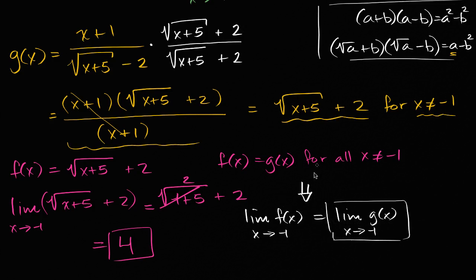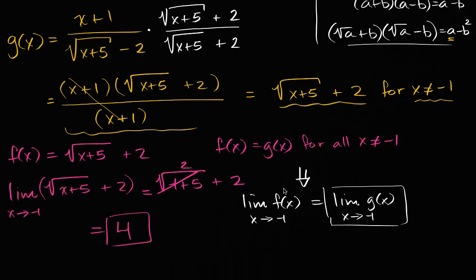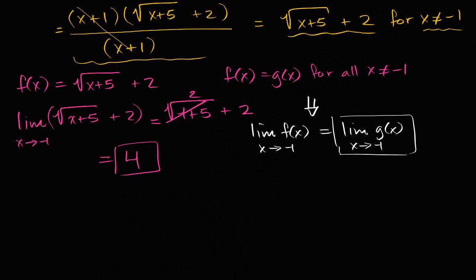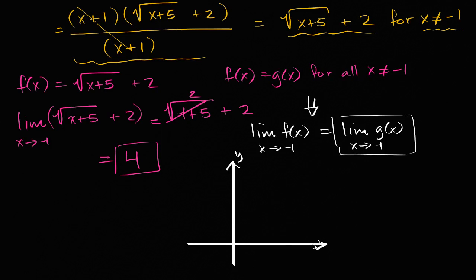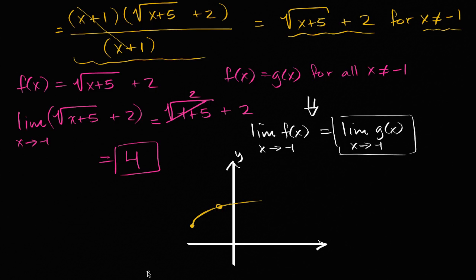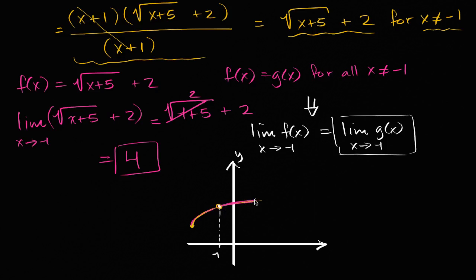If this leap doesn't make sense, think about it visually. If this is the y-axis and this is the x-axis, g of x looks something like this but with a gap — a point discontinuity — at x equals negative one. f of x has the same graph except without the gap. So to find the limit, we use f of x and evaluate what it would be to fill that gap at x equals negative one. Hopefully this graphical version helps.